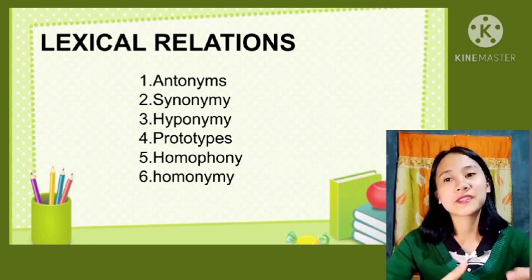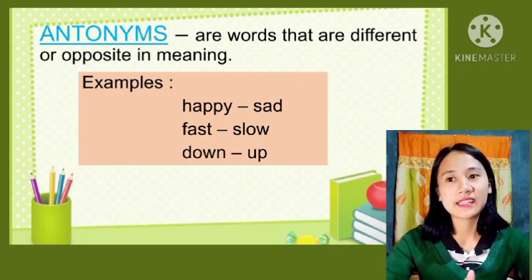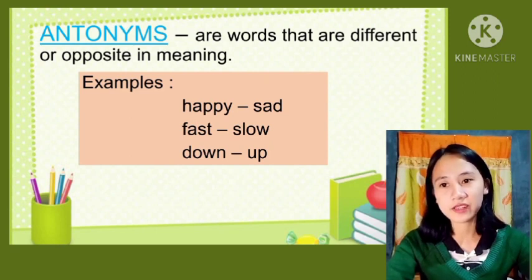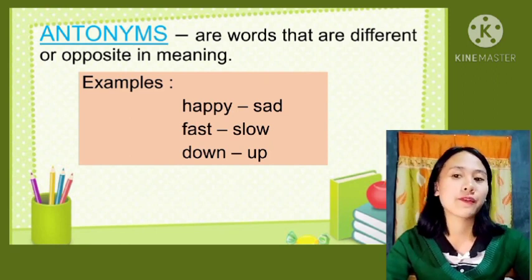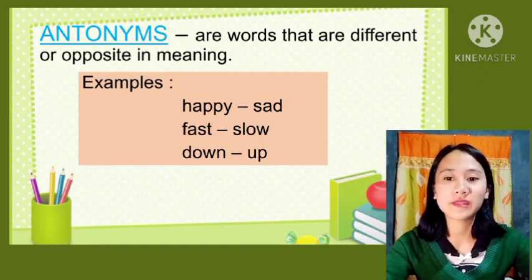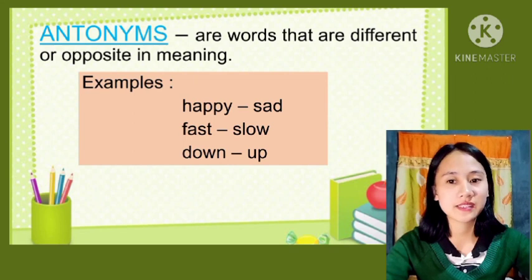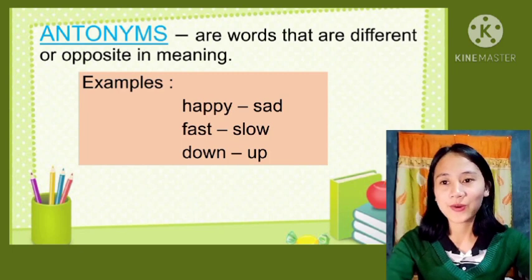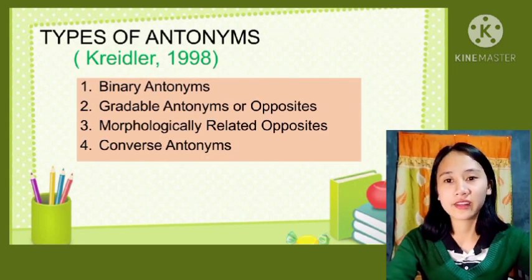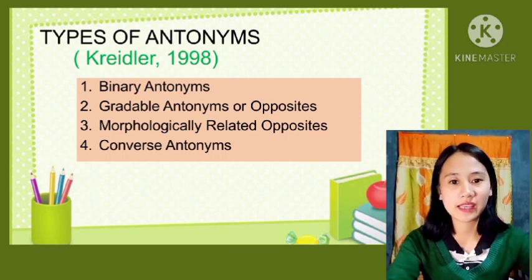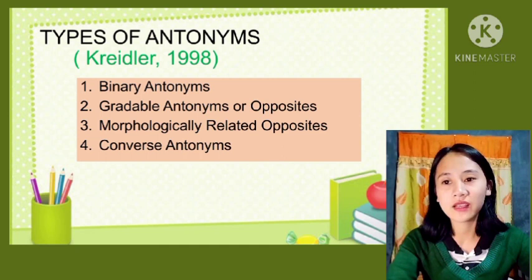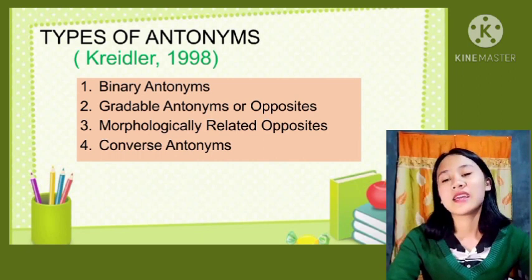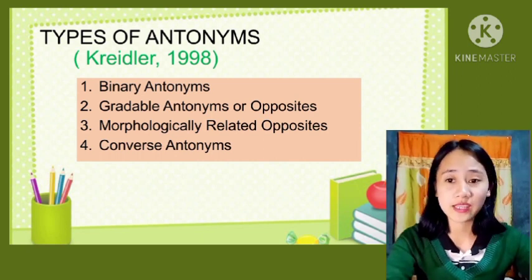Let us first discuss the first lexical relation: antonyms. Antonyms are words that are different or opposite in meaning. For example, happy and sad, fast and slow, down and up. According to Kedler (1998), there are four types of antonyms: binary antonyms, gradable antonyms or opposites, morphologically related opposites, and converse antonyms.